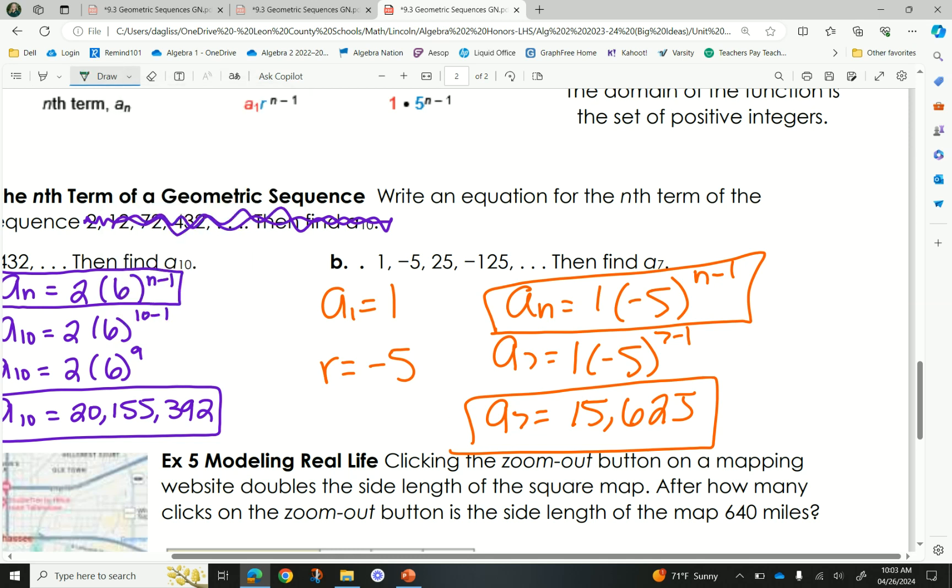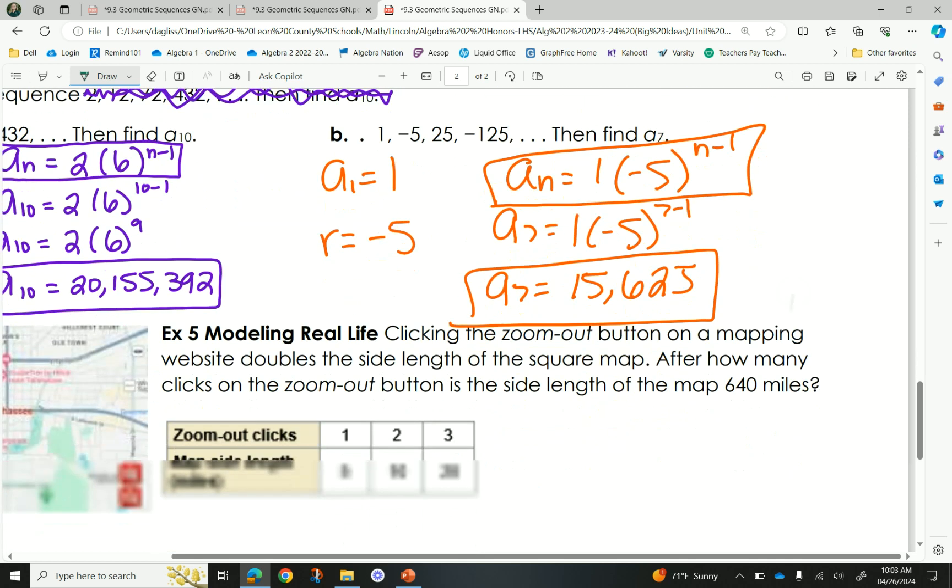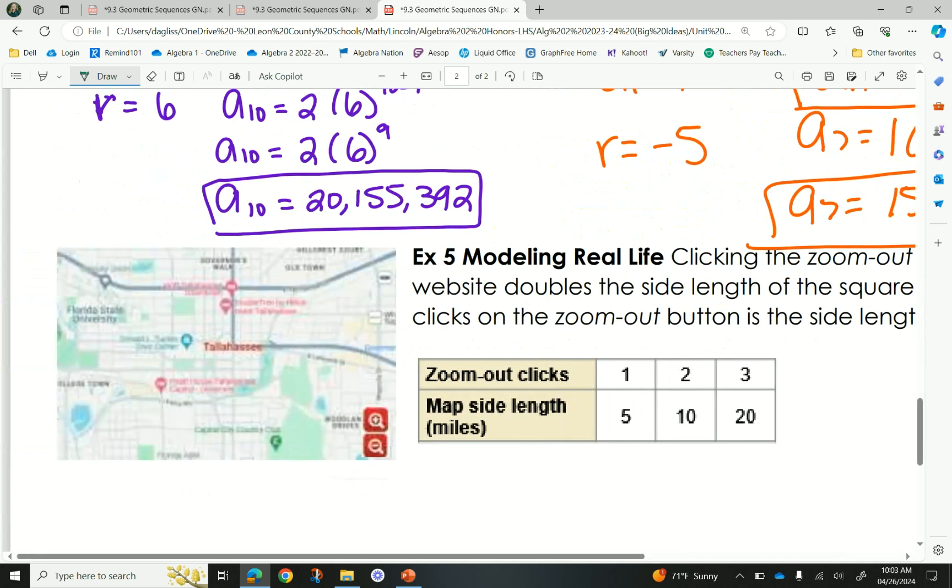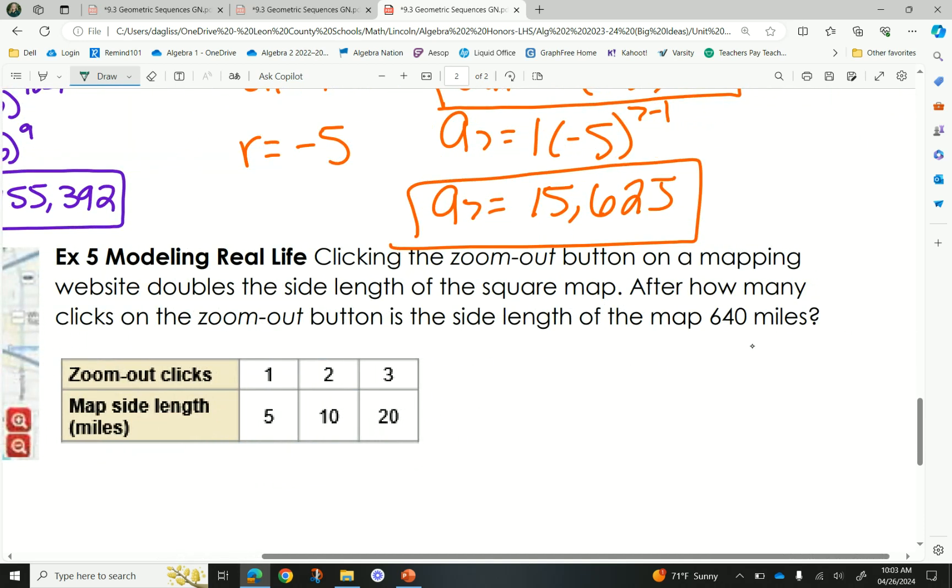All right. Let's get into real life. Yes. Clicking the zoom out button on a mapping website doubles the side length of a square map. After how many clicks on the zoom out button is the side length of the map 640 miles. So we have a map of Tallahassee right here. We have a table to show us how many clicks, and then the miles that's being represented on the side. It was, after one click, it's 5 miles. Two clicks, it's 10 miles. Three clicks, it's 20 miles. Okay? So we're going to create an equation first, and then we're going to answer the question. How many clicks to get 640? Okay?